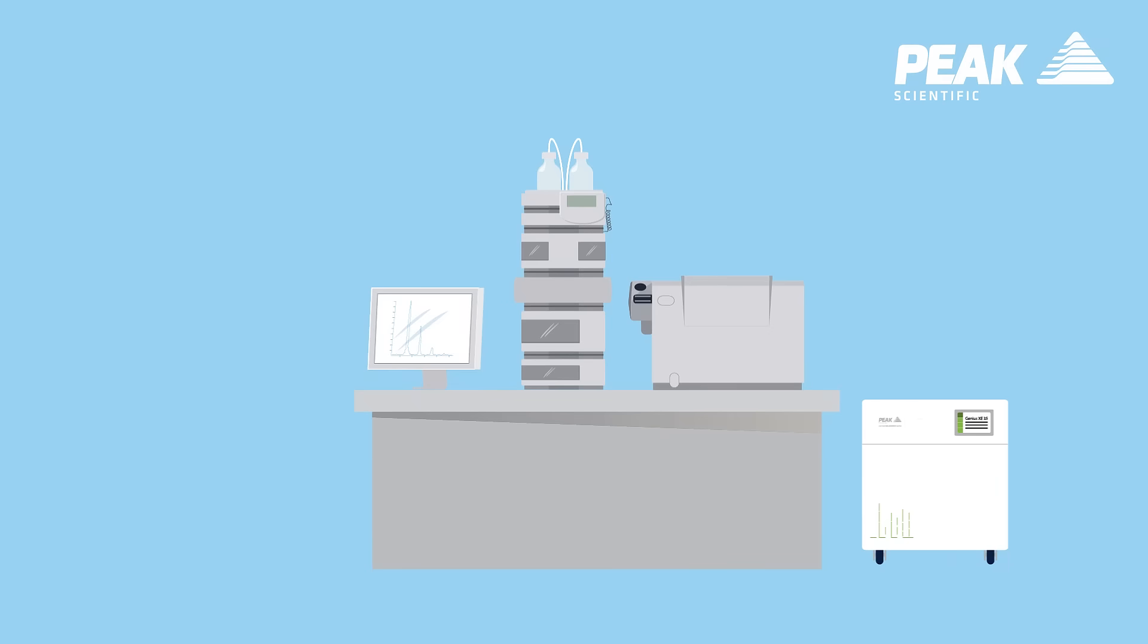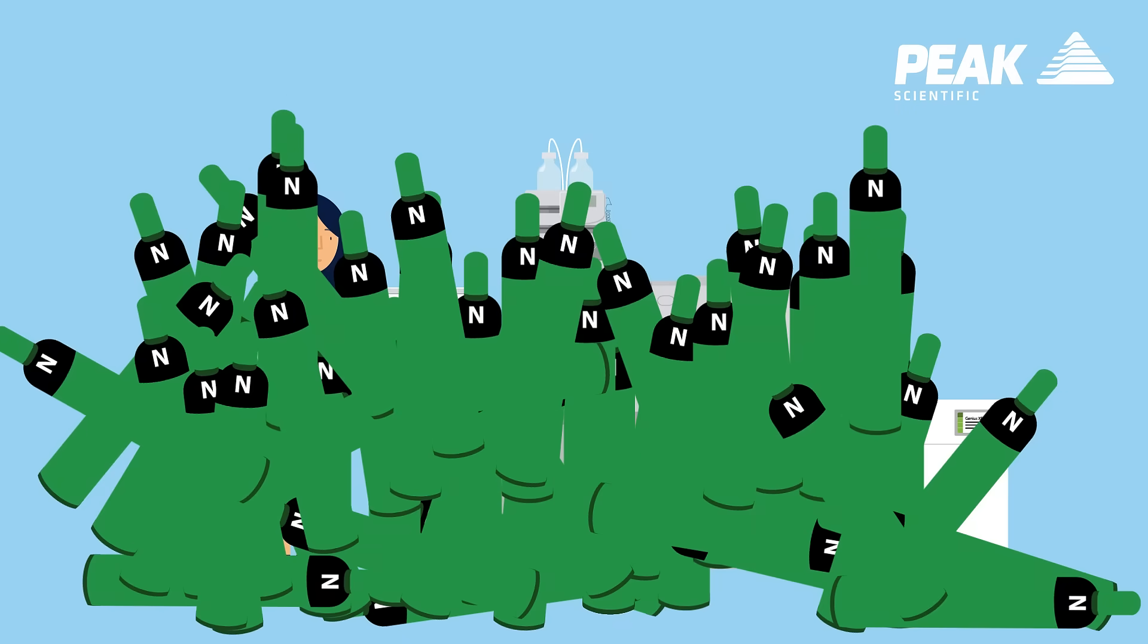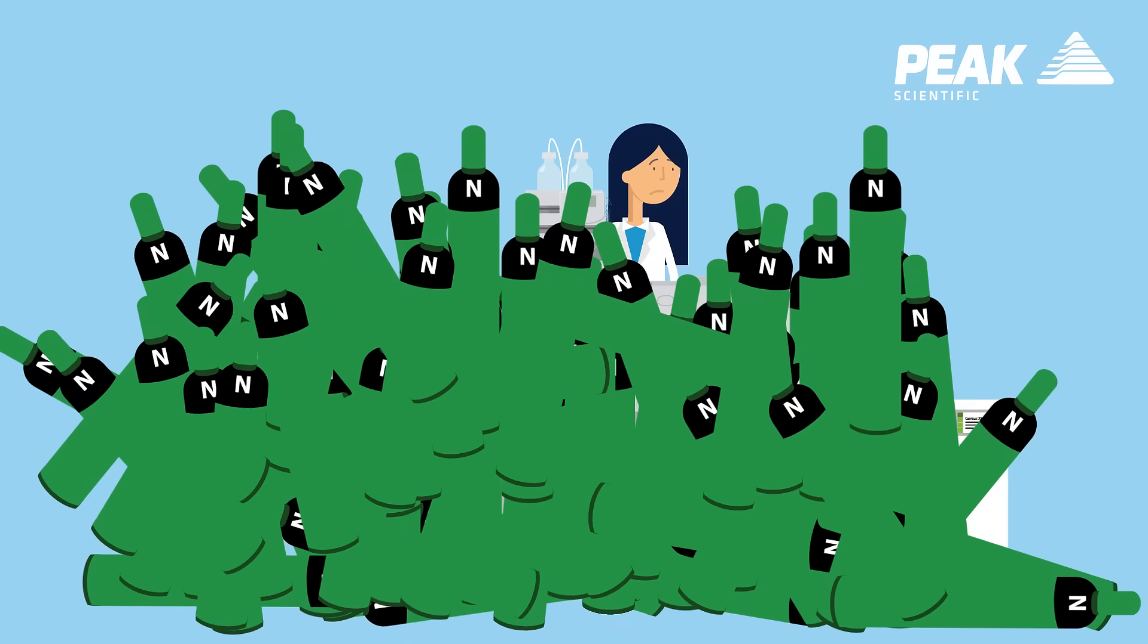Gas generators are both efficient and help reduce a lab's carbon footprint. For example, a nitrogen generator that produces 32 liters of nitrogen per minute will produce over 4 million liters of nitrogen before needing to be serviced. This is the equivalent to over 400 nitrogen cylinders that would require transportation from the cylinder depot to the lab.